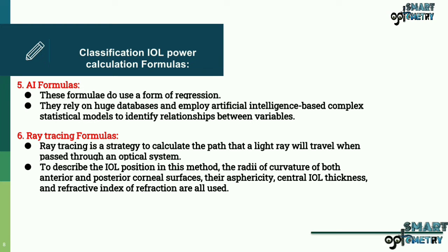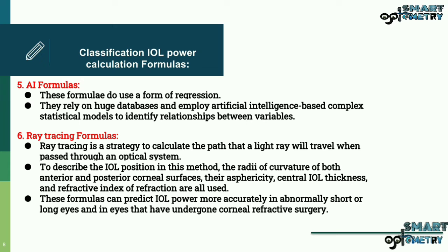To describe the IOL position in this method, the radius of curvature of both anterior and posterior corneal surfaces, their asphericity, central IOL thickness, and refractive index of refraction are all used. These formulas can predict IOL power more accurately in abnormally short or long eyes and in eyes that have undergone corneal refractive surgery.